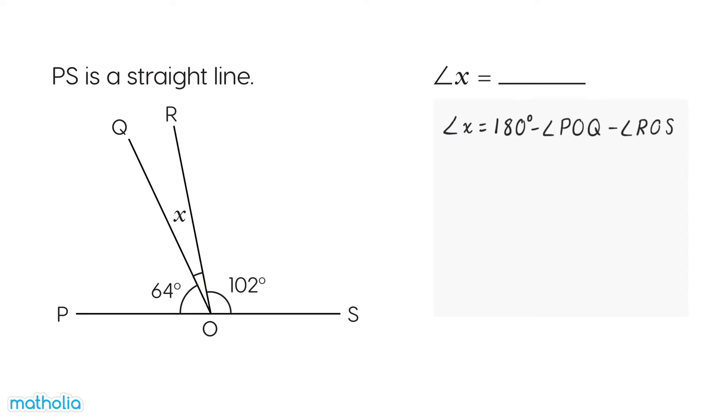We know angle POQ is 64 degrees and angle ROS is 102 degrees. Subtracting these angles leaves 14 degrees. So angle X is 14 degrees.